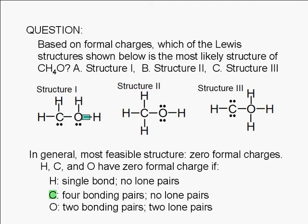How about carbon? A carbon atom has a zero formal charge if it has four bonding pairs and does not have a lone pair. That's not the case in structures 1 and 3.